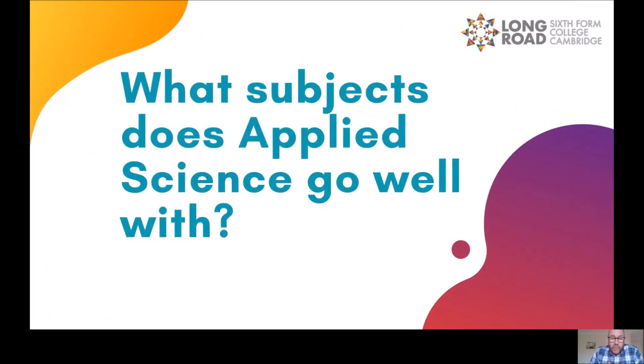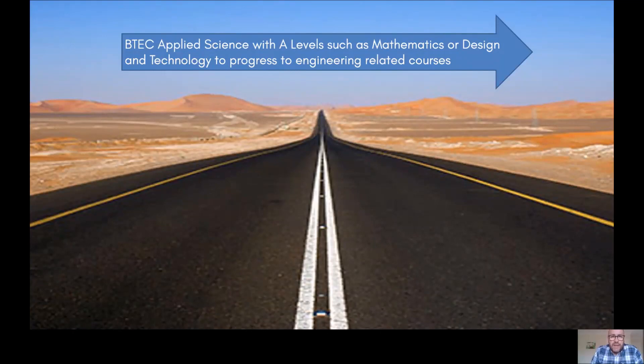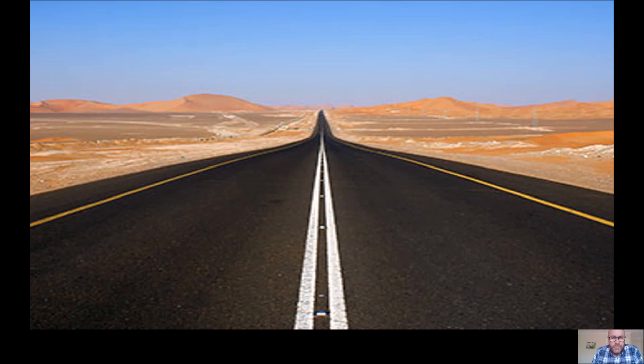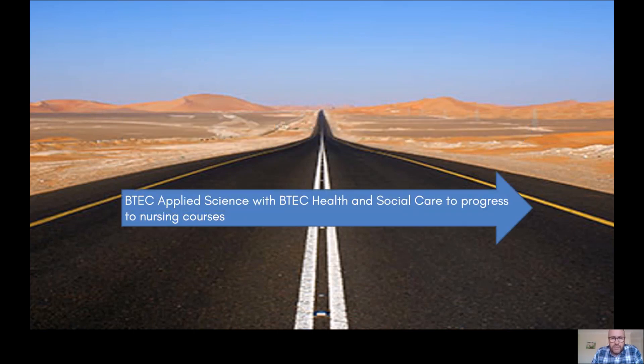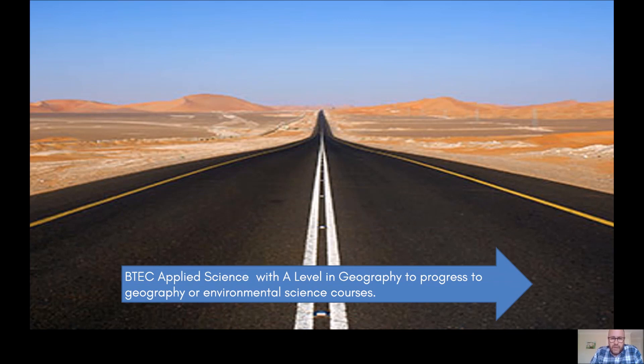So the extended diploma course is obviously a 3 A-level equivalent, so you don't get to choose any other subjects. But if you would like to do the extended certificate, then you need to think about what other subjects might go well with applied science. You might want to combine it with maths or design and technology, particularly if you're going to go off to do some engineering related course at university. You could combine it with psychology or BTEC sport. Again, that would be to progress to sports psychology or sports science courses. You might want to combine it with health and social care to progress to nursing or working in care homes. Another common option is combining with geography. Again, that will enable you to go off to do geography or environmental science courses.